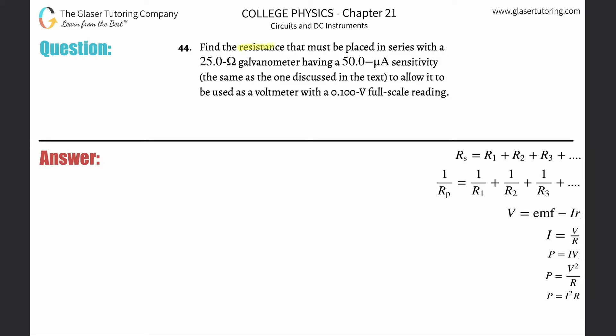Number 44: Find the resistance that must be placed in series with a 25 ohm galvanometer having a 50 microamp sensitivity, same as the one discussed in the text, to allow it to be used as a voltmeter with a